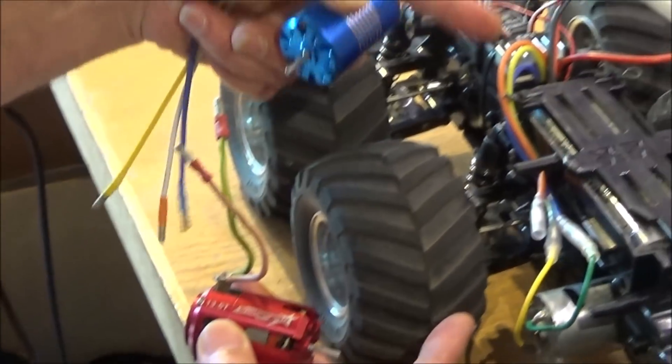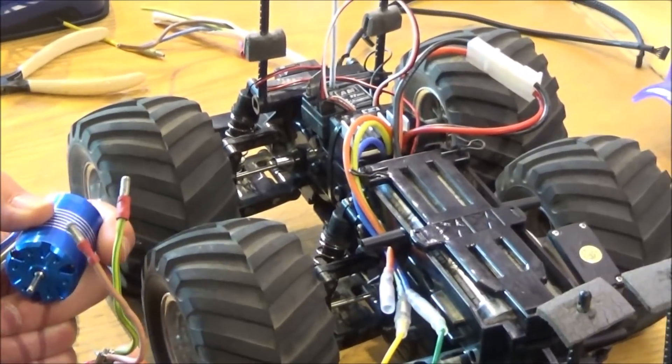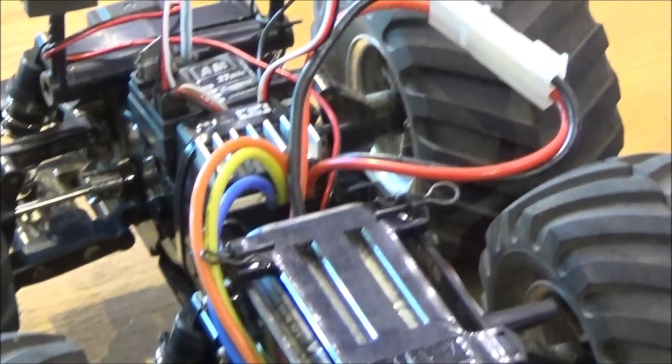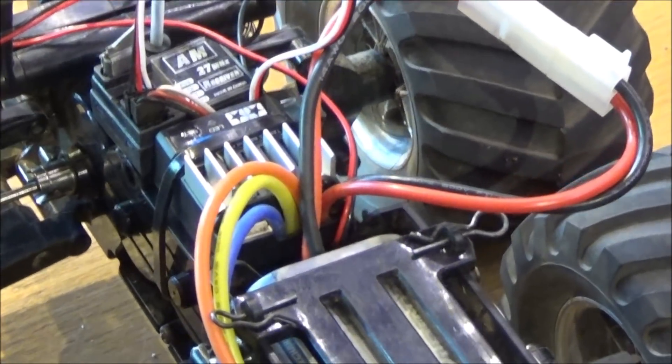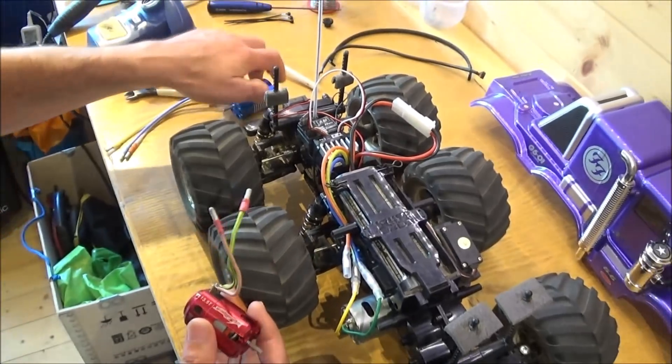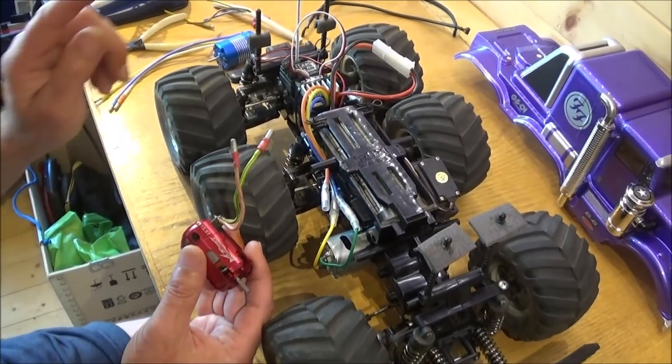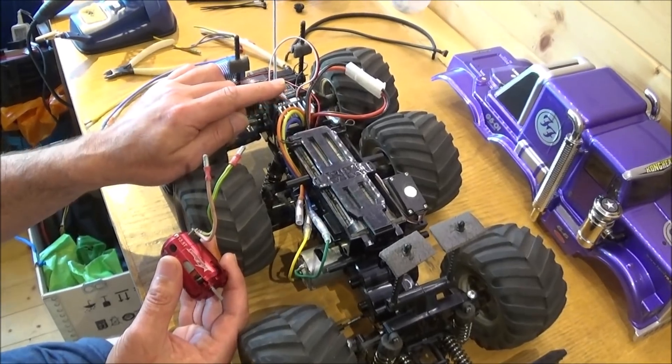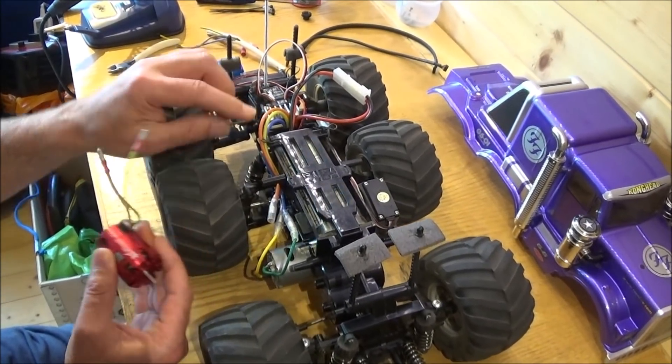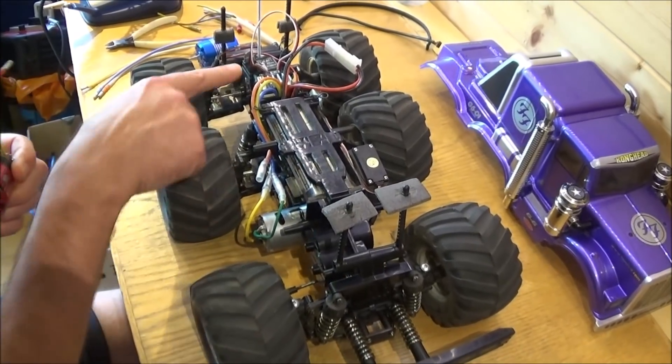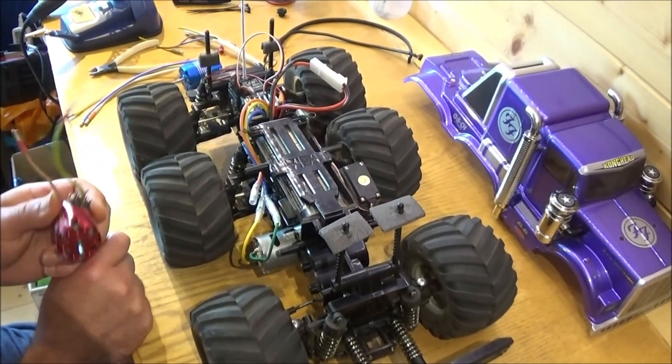Both of these would go okay with the Tamiya ESC, the TBLE02, but I prefer sticking to the 13.5 because I know it'll run all day with that and you won't get any overheating problems. Cheapest way because we've already got the Tamiya ESC, the TBLE02 is brushed or brushless, hence the three wires for the three phases of the brushless.